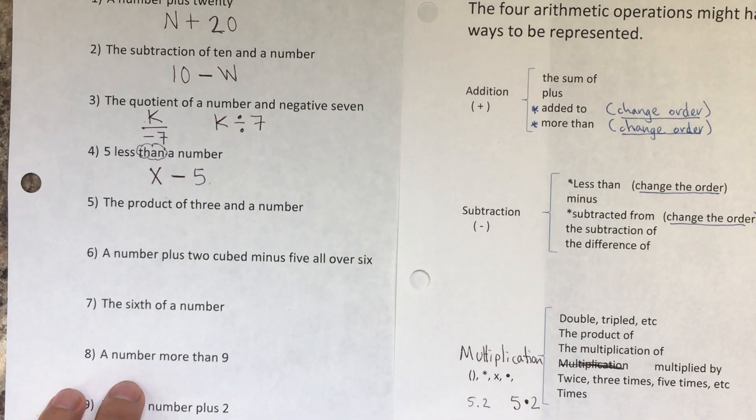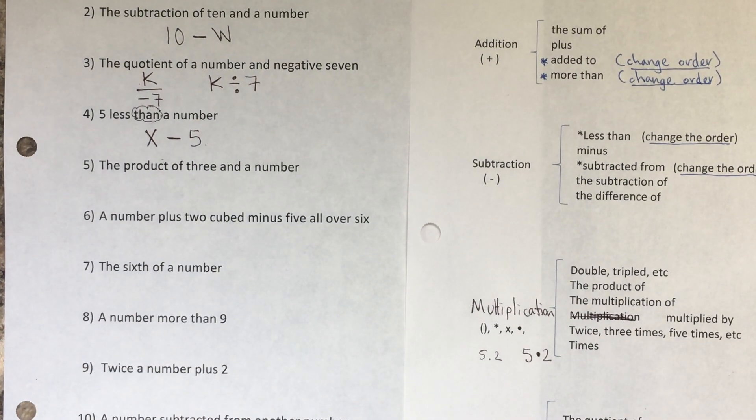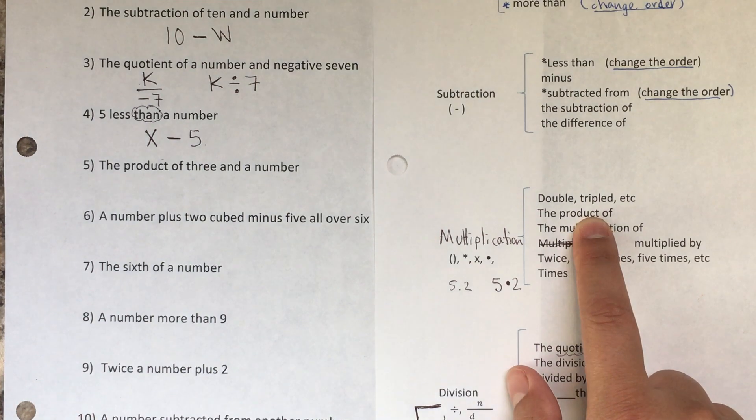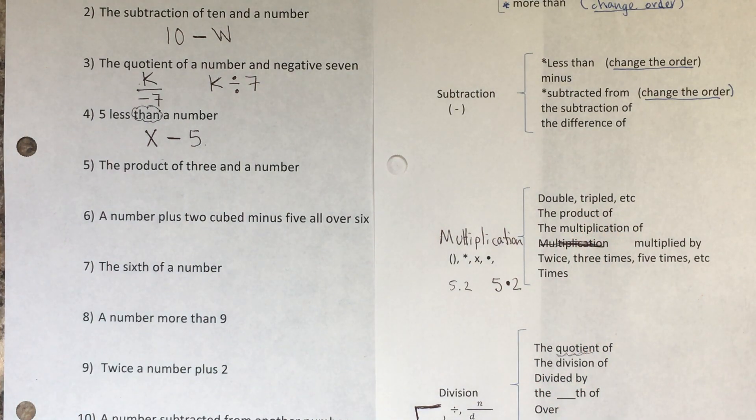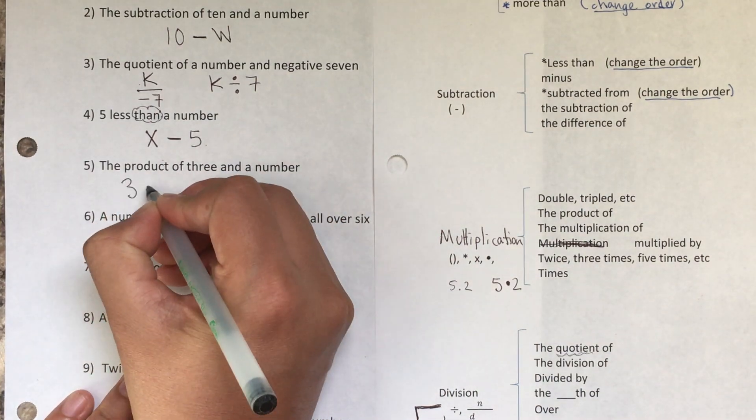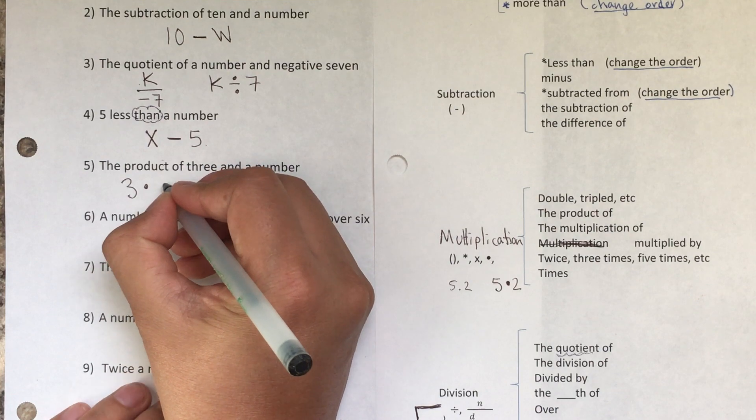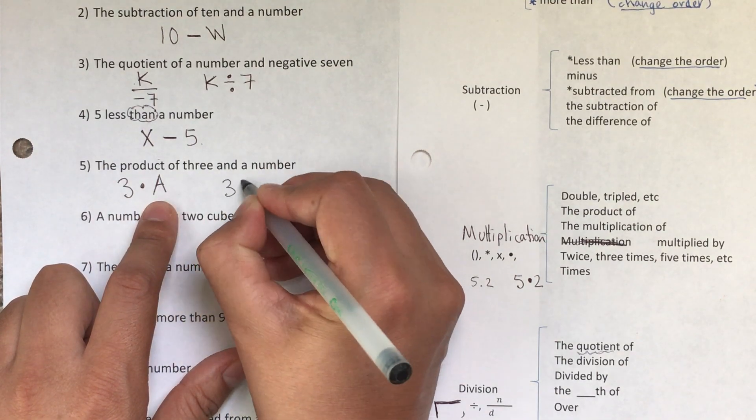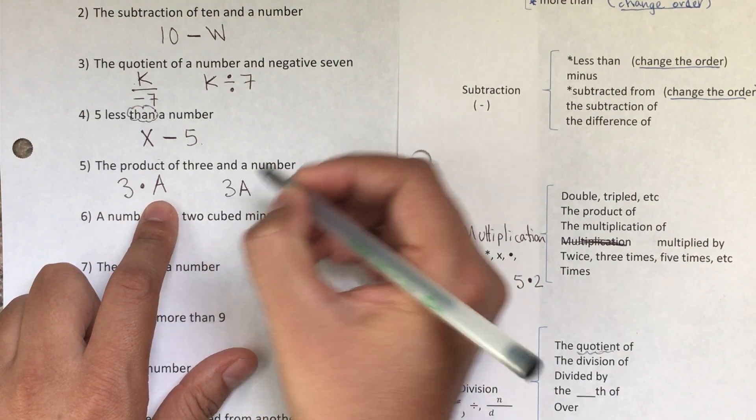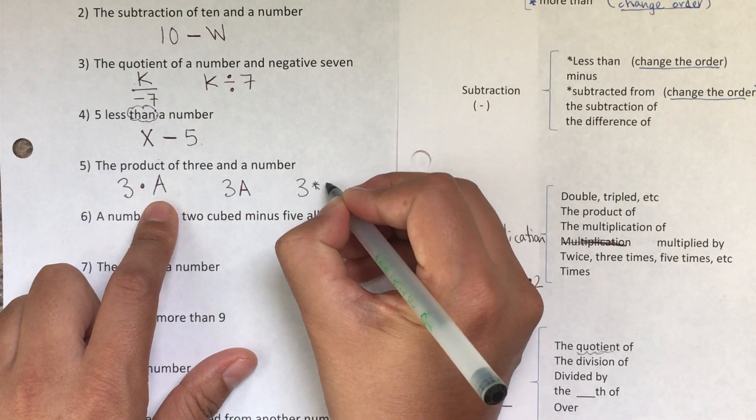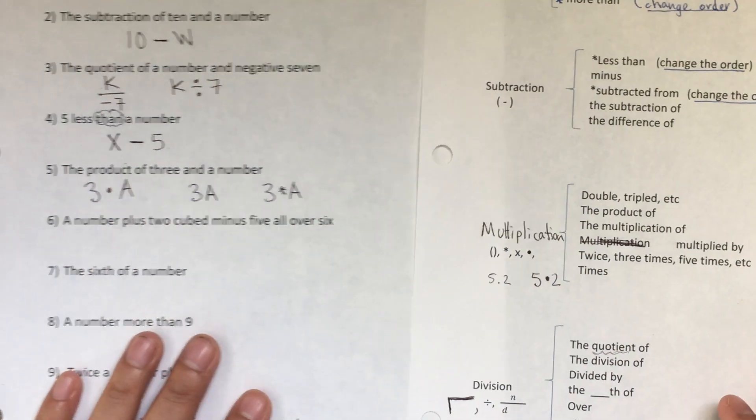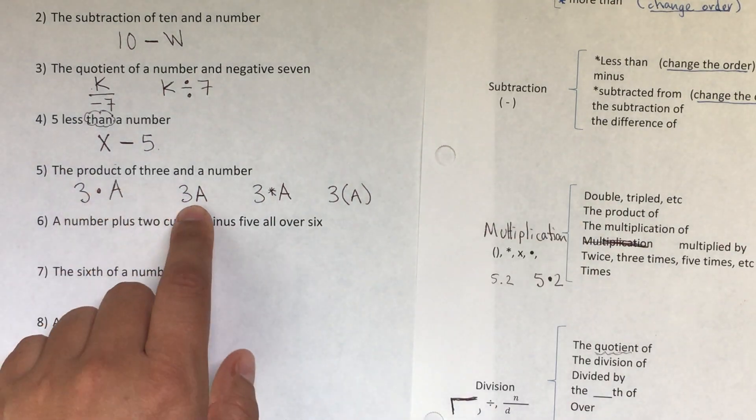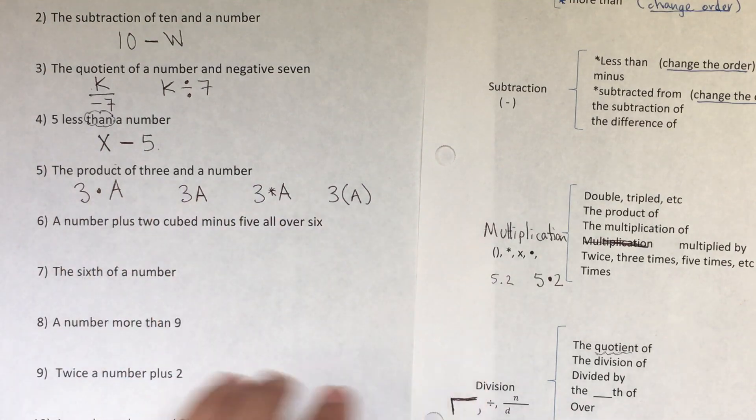The next one says the product. Product—we go to the list and we see that it's multiplication. The product of three and a number. I'm gonna use a now, so this can be written as three times a, or just three a. You can write with the asterisk 3*a, or you can write 3a. Three times a, three a—it's all the same. You can write it anywhere you want.